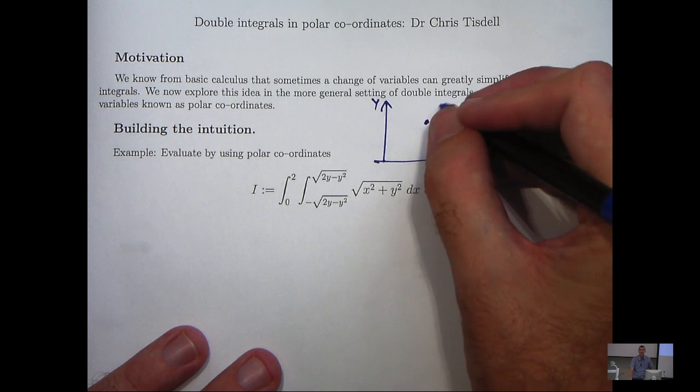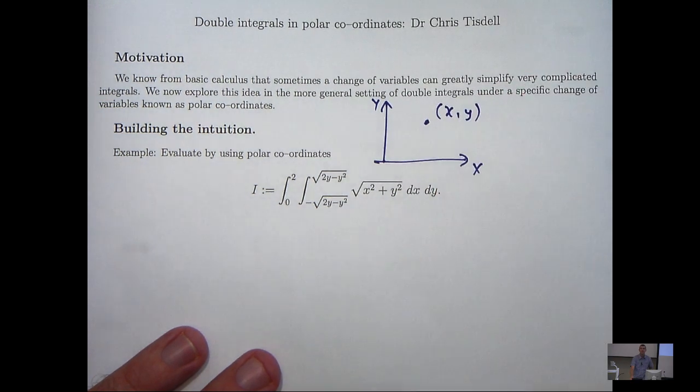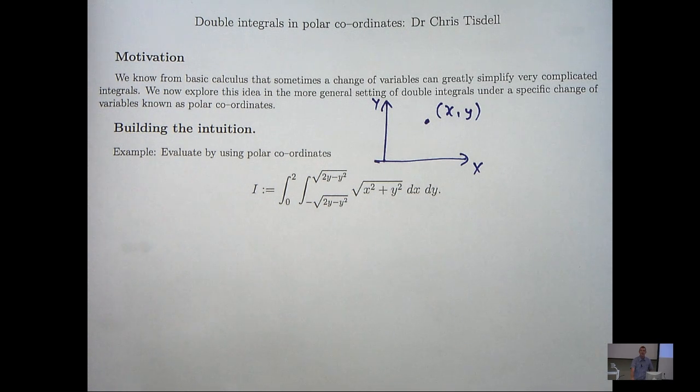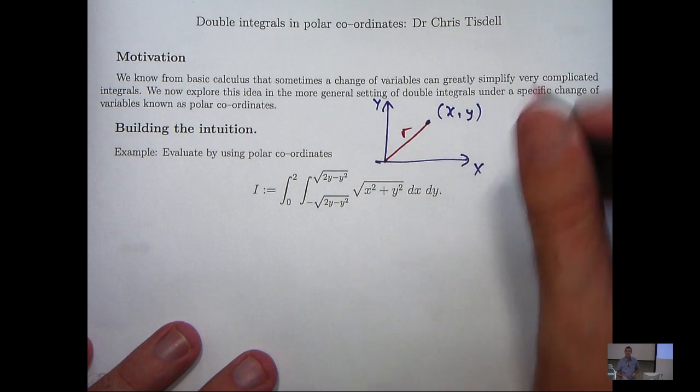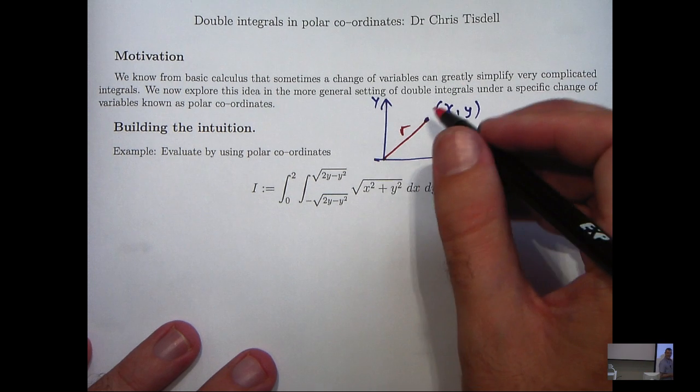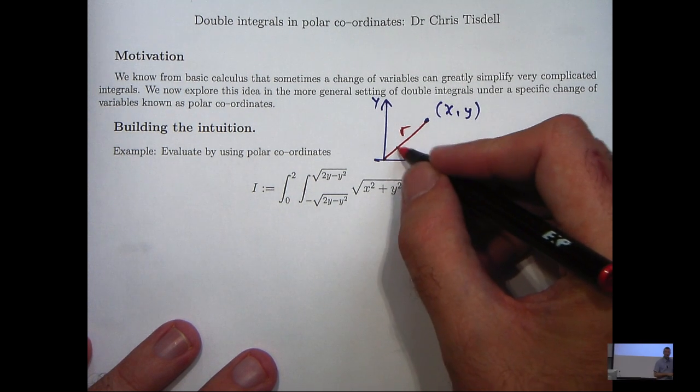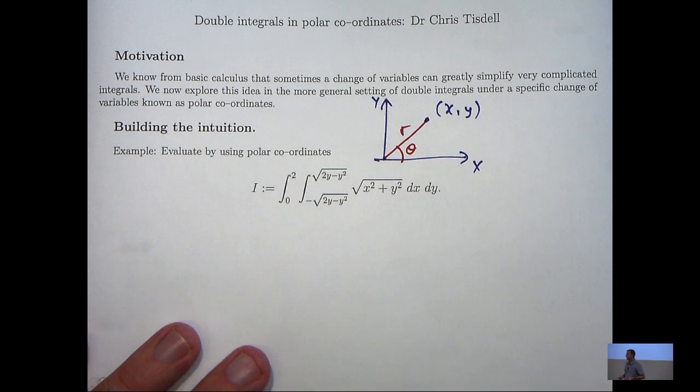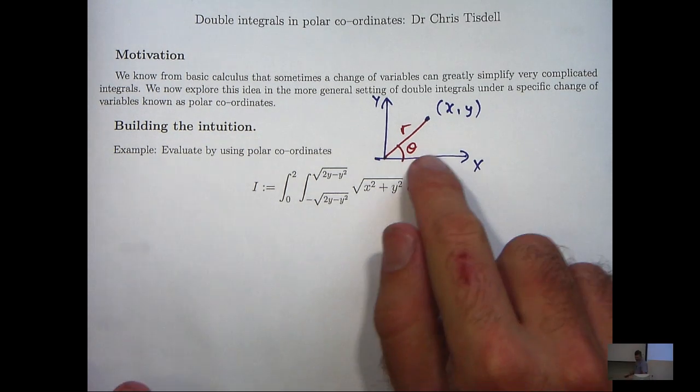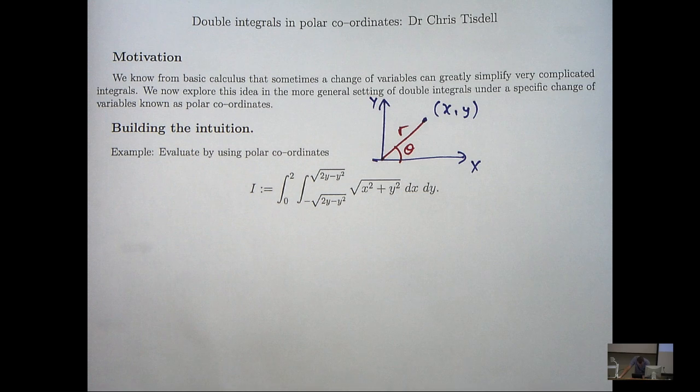So if I'm at a point in the xy plane, then this point has a distance to the origin that I'm going to denote by r. And you can see we can form an angle to the positive ox axis, which I'll denote by theta. Now r and theta are known as polar coordinates.